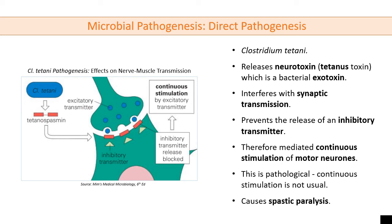Here is a reasonably thorough explanation of tetanus toxin, released by Clostridium tetani - a toxin that impacts the nervous system. What it's essentially doing is preventing the release of inhibitory transmitter at this synapse, so we get continual transmission across the synapse because there's no inhibitory transmitter being released, resulting in continuous excitation. This is why it causes spastic paralysis - it's preventing the nervous system from regulating itself properly, and we observe continuous stimulation.